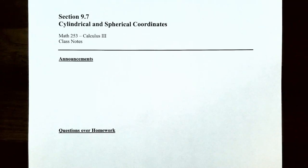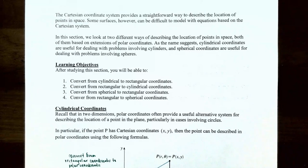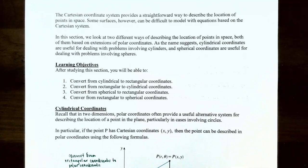Hi everyone, it's Professor Permanent and today we're going to talk about cylindrical coordinates. You can think of the Cartesian coordinate system as a straightforward way to describe the location of points in space. However, some surfaces are very difficult to model with equations using rectangular coordinates. In this video we're going to talk about how to find the location of points in space using the extension of polar coordinates called cylindrical coordinates, which are very useful for dealing with problems involving cylinders.